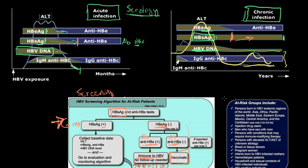Who should you be screening for hepatitis B? Well, anyone who's at risk — patients with multiple sexual partners, and also, as shown on that map, anyone who might be from an endemic area is potentially at risk because of the high prevalence of hepatitis B in some parts of the world.